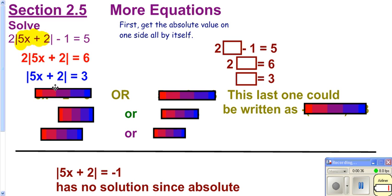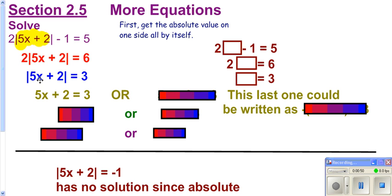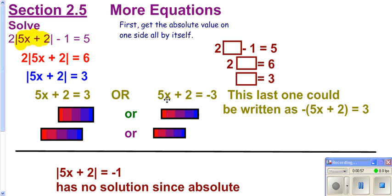So now you've got to think: according to absolute value, if what's inside is positive, absolute value does nothing, and so then we have this. Or if what's inside is negative, absolute value makes it positive by multiplying it by negative 1. So if you have this, it could also be written like this, where you take the negative of the other side by dividing both sides by negative.